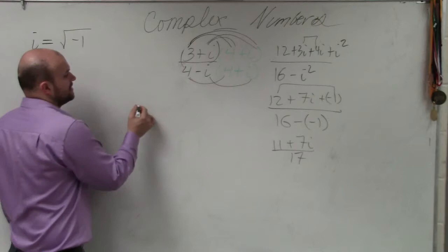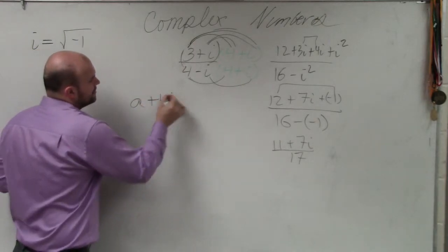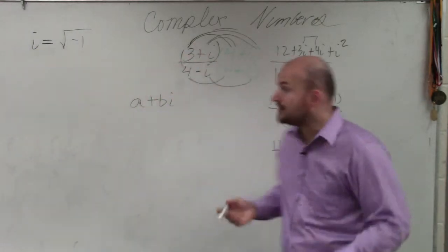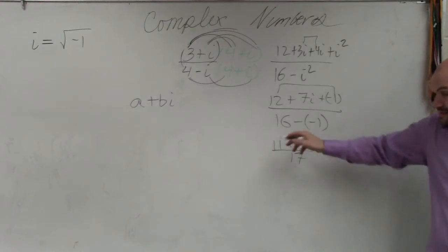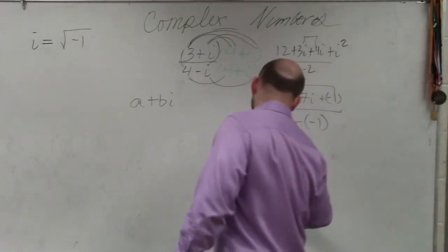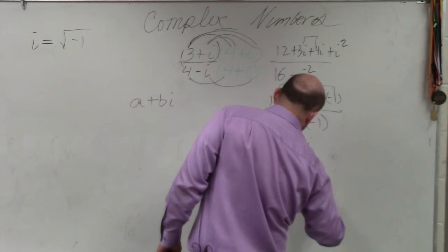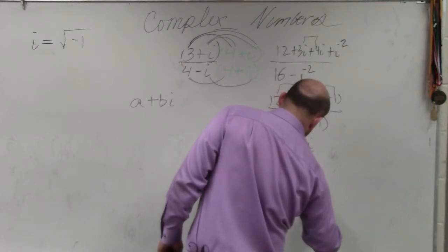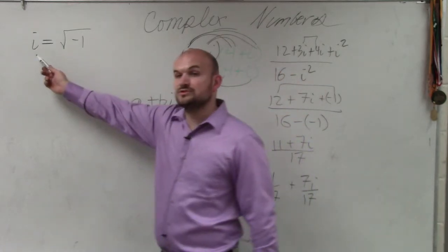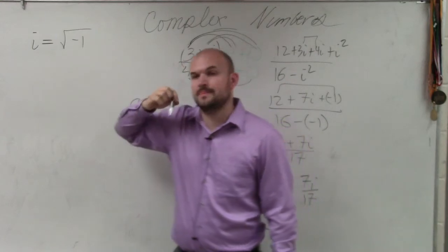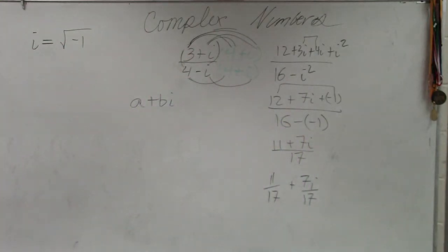But that's not the final answer, because we said that complex numbers are written in the form a plus bi. So to write this in the form a plus bi, my final answer would be 11 over 17 plus 7i over 17.